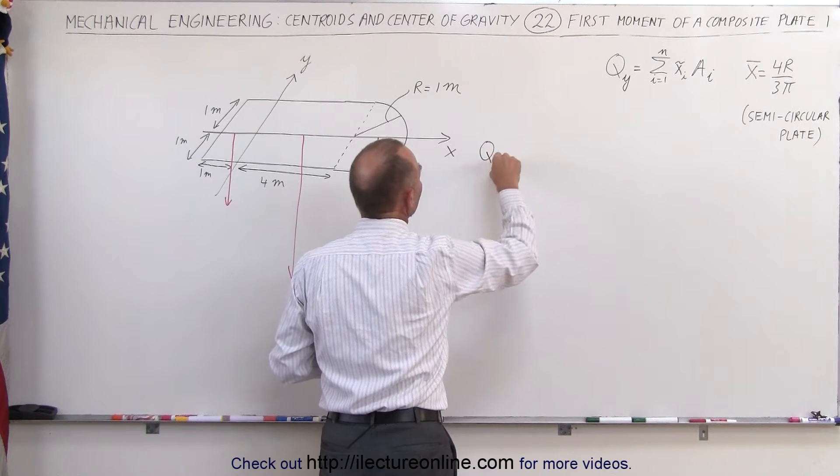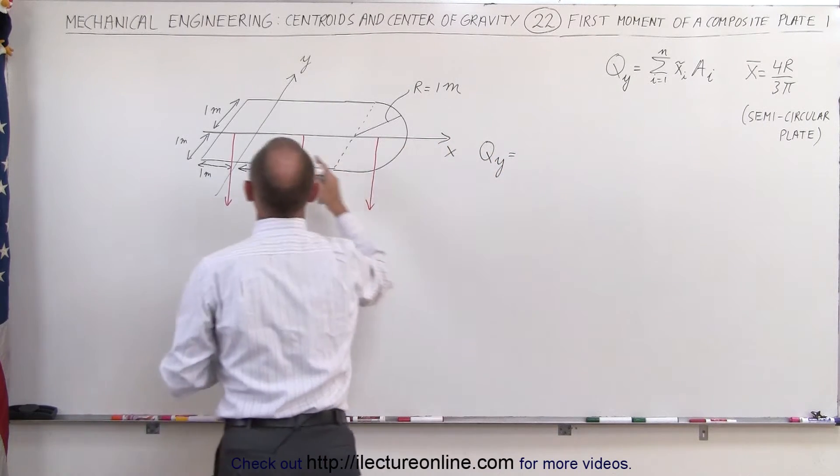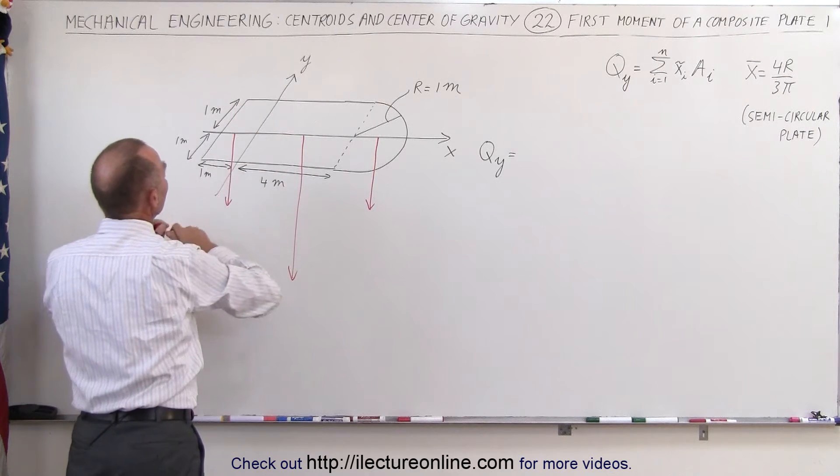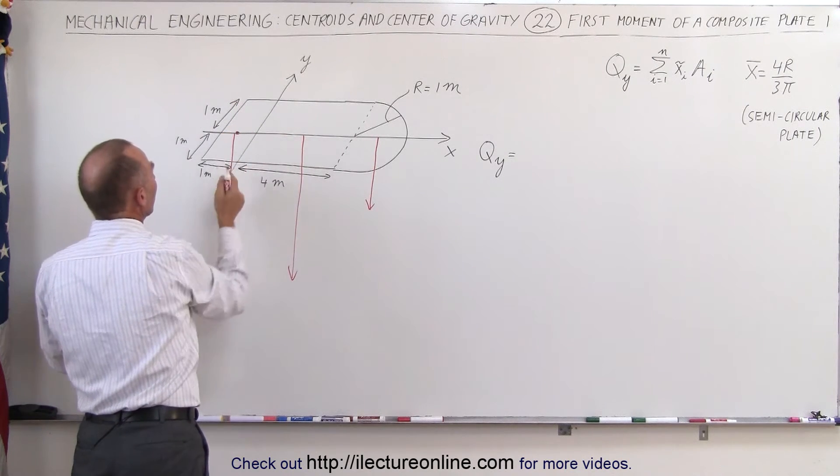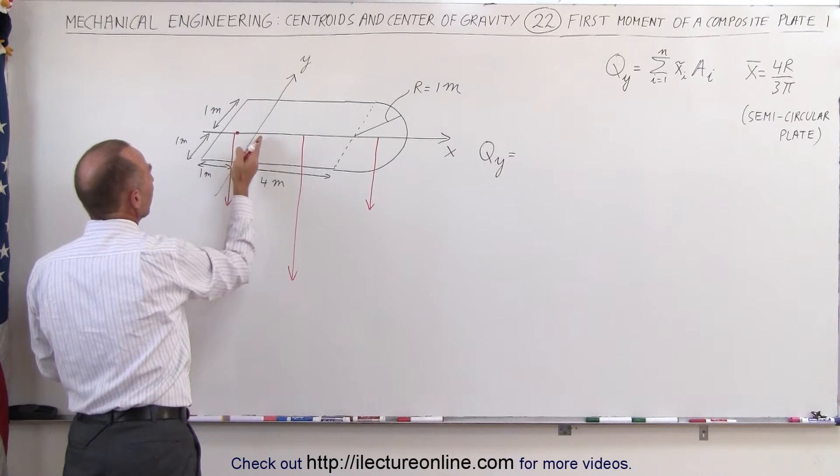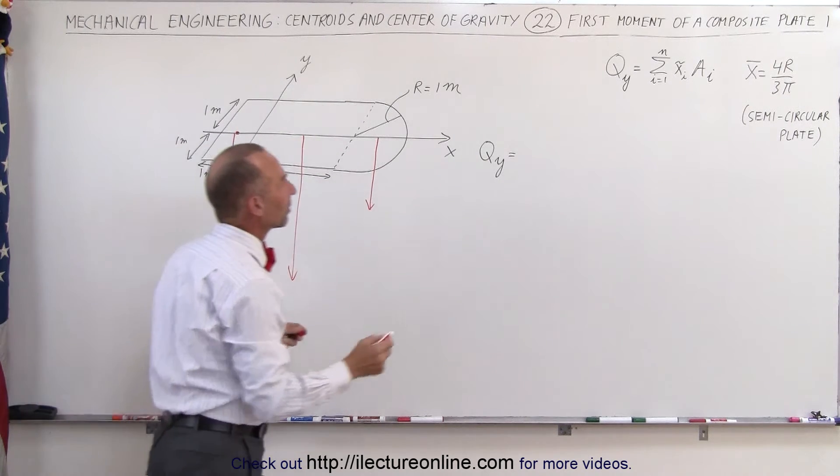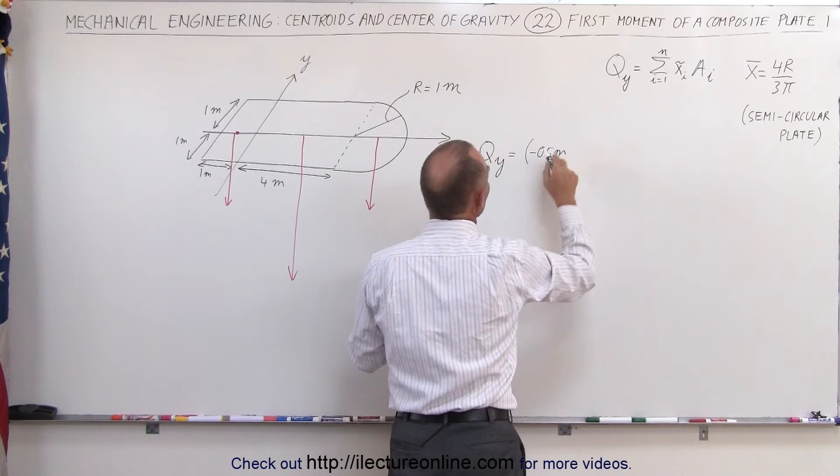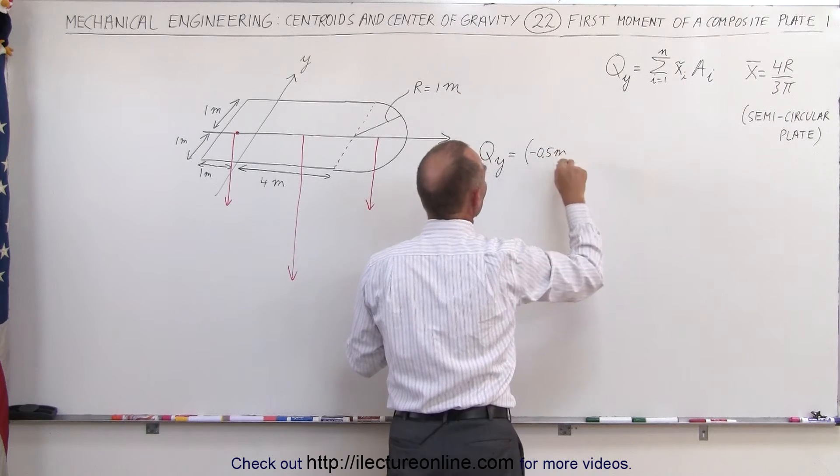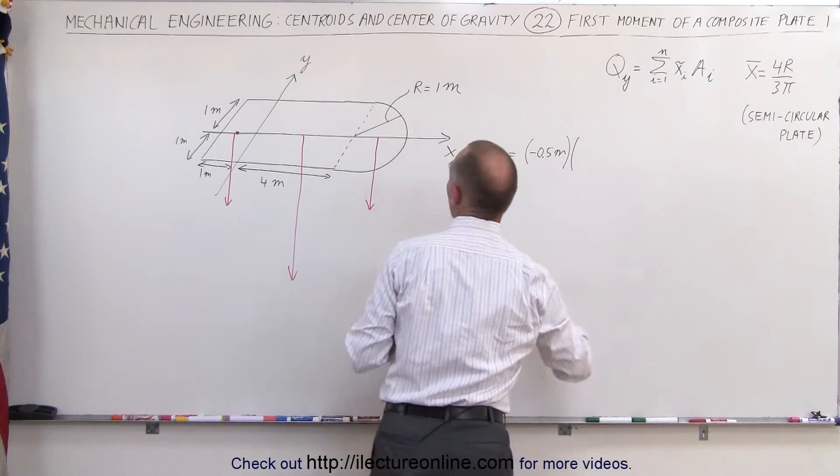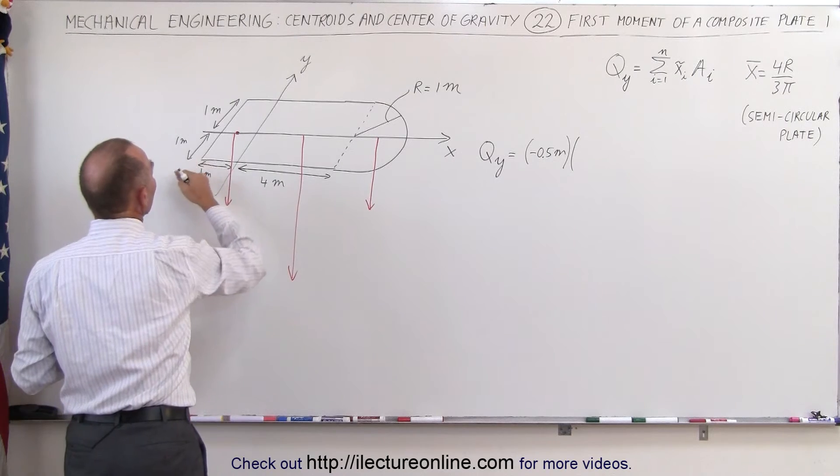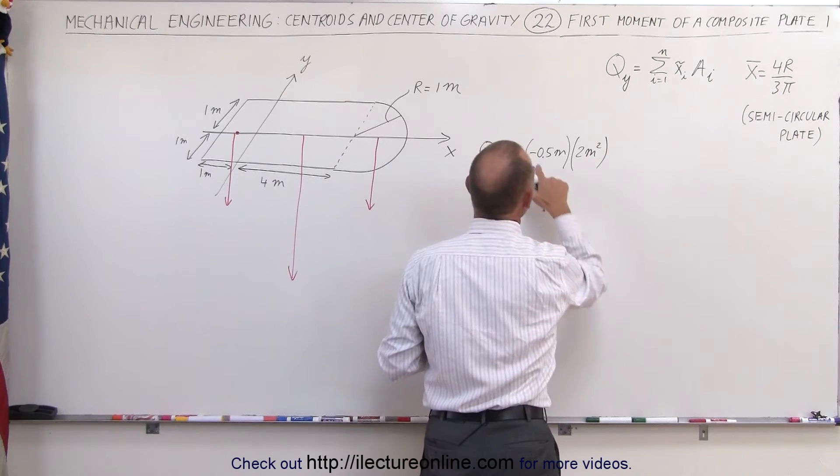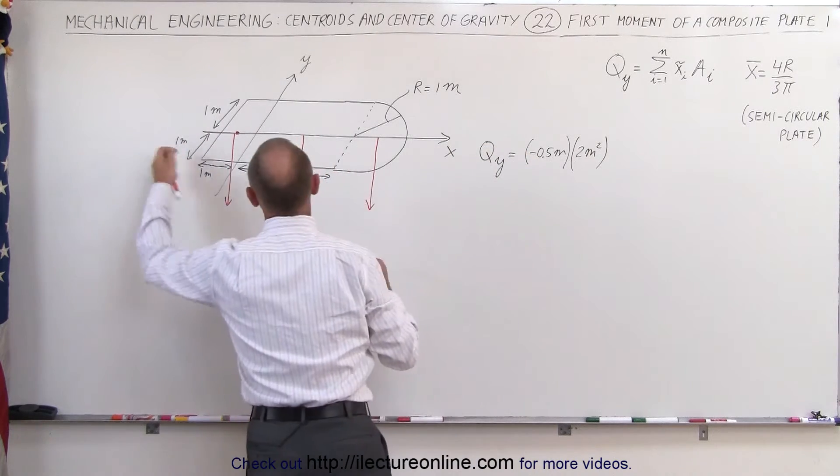Q sub y is equal to the x-coordinate of the center mass of this piece right here that would be halfway between the y-axis and the edge of that piece. Since it is one meter wide in this direction, that would be at minus 0.5 meters relative to the y-axis. Minus 0.5 meters, multiply times the area. Now the area is 1 meter wide times 2 meters long, that's 2 meters squared for the area, and it's a minus because it's on the left side of the y-axis.